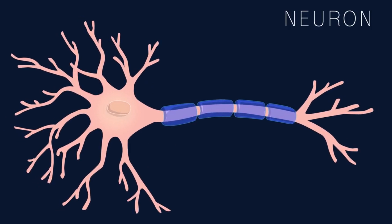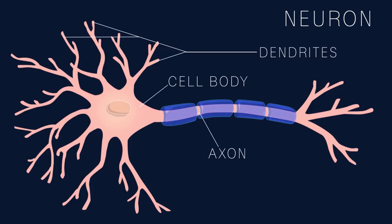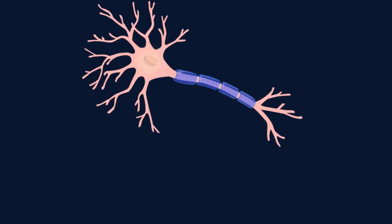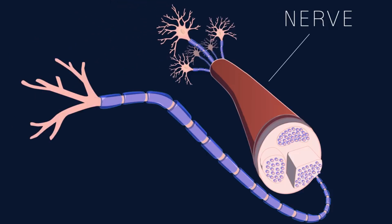This is a neuron which has four main parts. The dendrites receive information. The cell body processes and integrates that information. The axon carries the information along long distances from one part of the neuron to another. And the axon terminal transmits the information to the next cell in the chain. A bundle of axons traveling together is called a nerve.